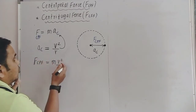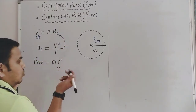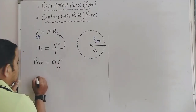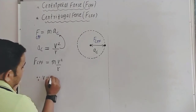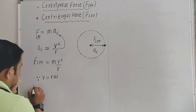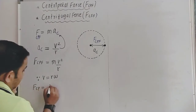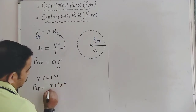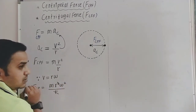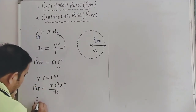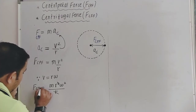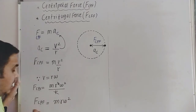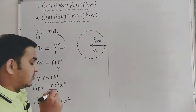If we substitute ac = r·ω², and since we know v = r·ω, substituting v² = r²·ω², we get Fcpf = m·r²·ω²/r, and the r cancels to give centripetal force = m·r·ω². So the magnitude of centripetal force is m·r·ω².